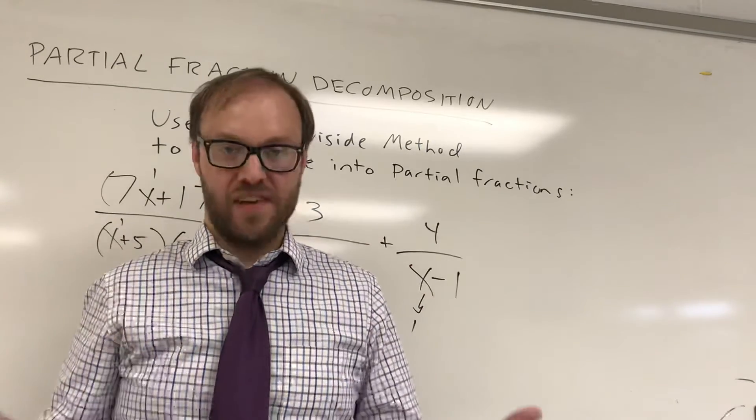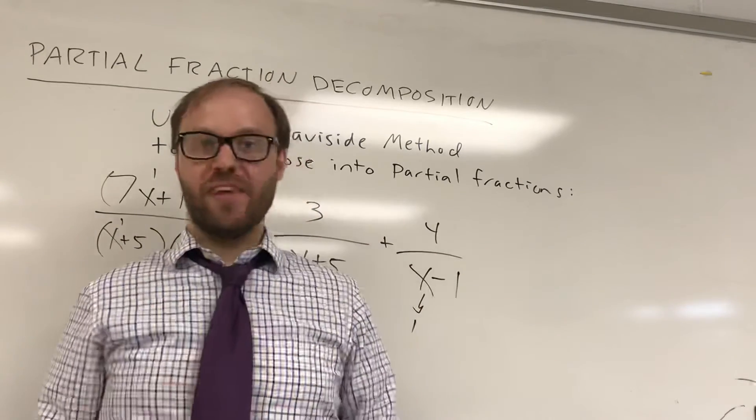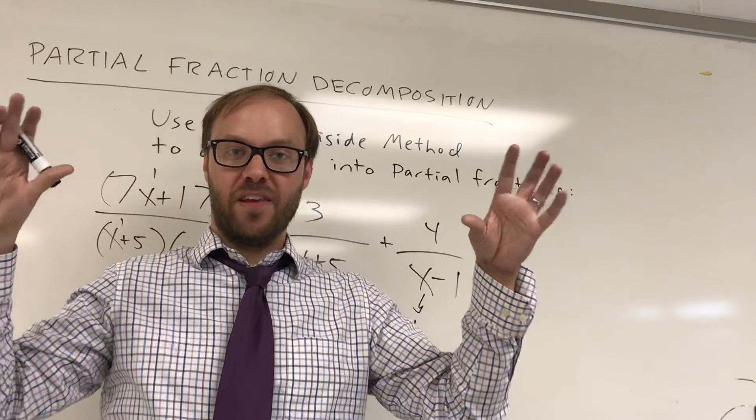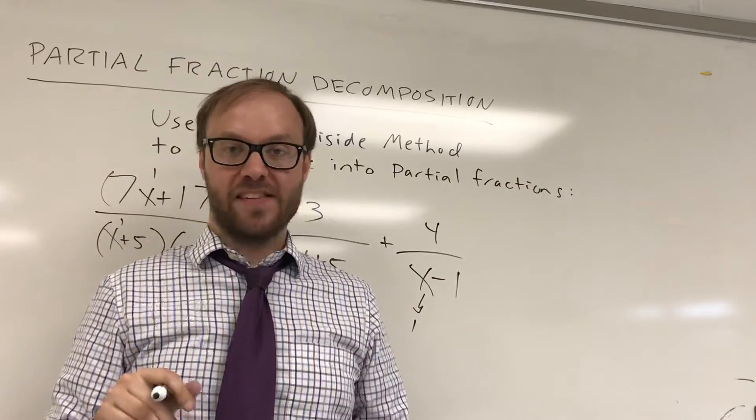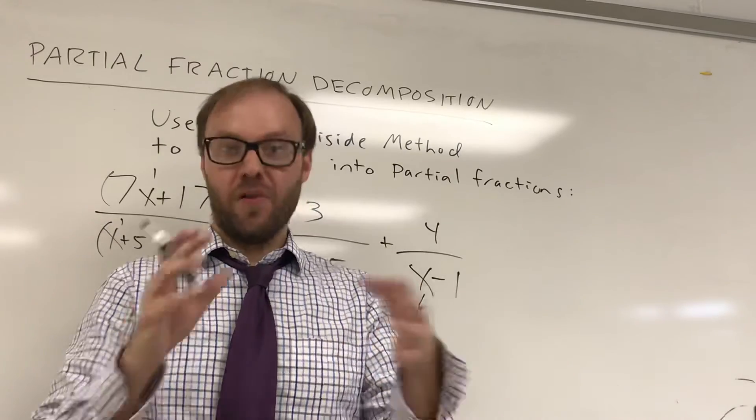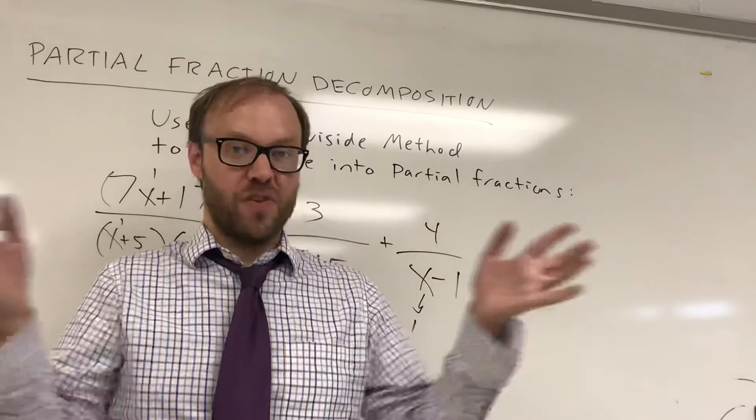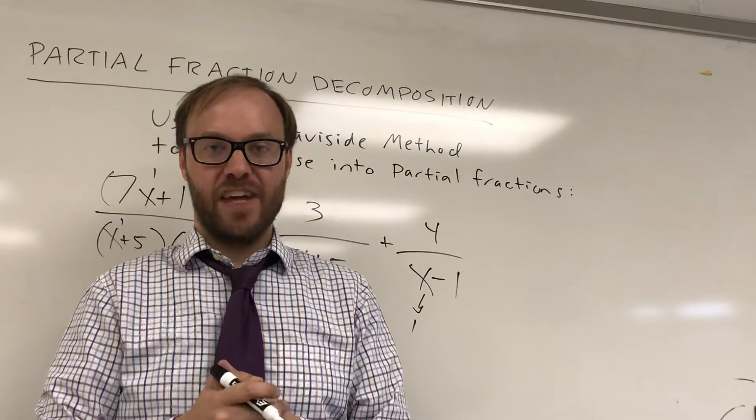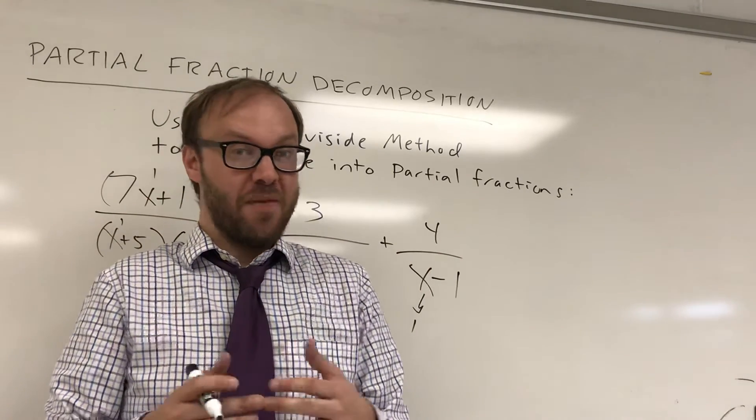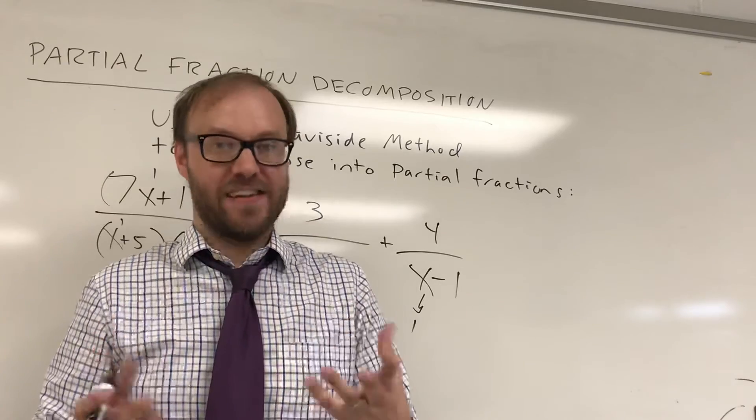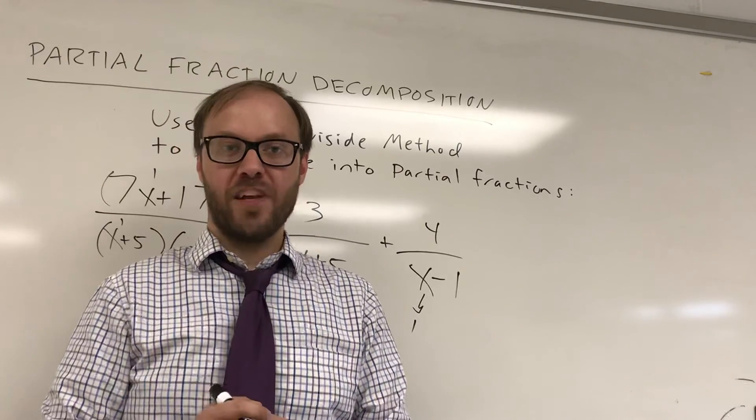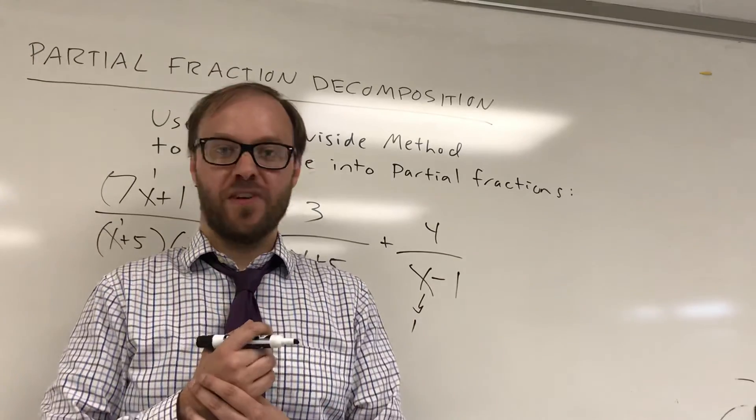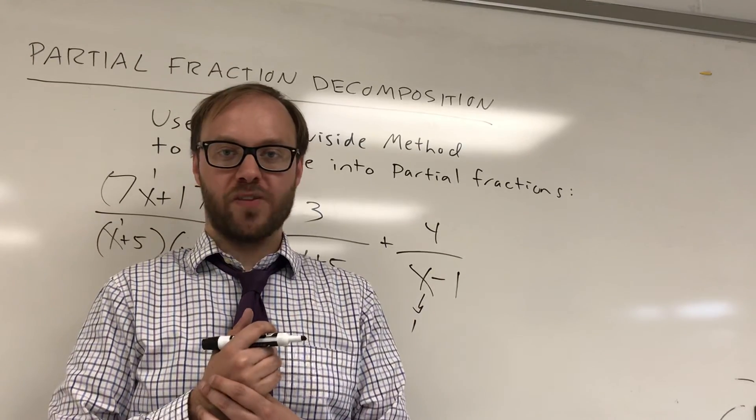So you certainly don't have to use this if you want to do the in-between version and you just want to write out the equation like we discussed in earlier videos and sub in a value of x that would make a term 0 and make it cancel out. You can also shorten the process down and not do the full cover-up method, but just kind of a variation on that. But the cover-up method can be very nice. So I will put up a couple more videos showing you this. And, again, don't have to use it, but it will save you a little bit of time if you understand how it works.